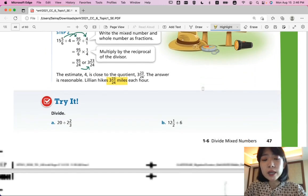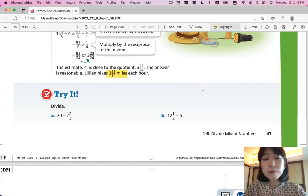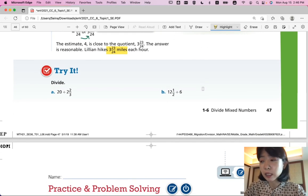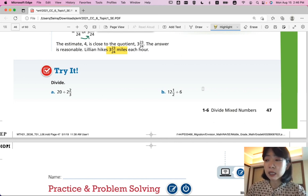So, let's look at the last try. Divide parts A and B, change your whole numbers and mixed numbers into fractions and change it to multiplication and solve the division problem. So, if you can do it by yourself come back when you're ready for answers.